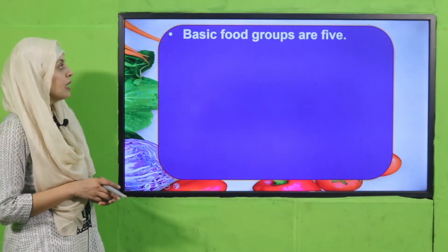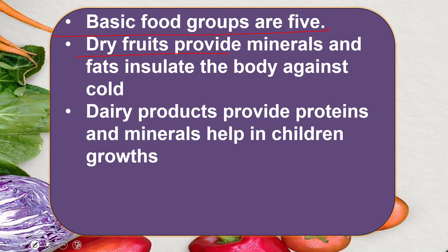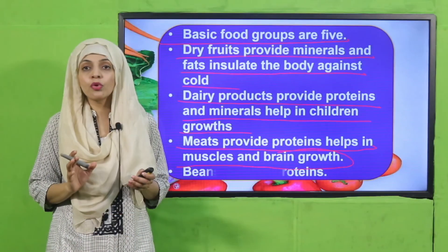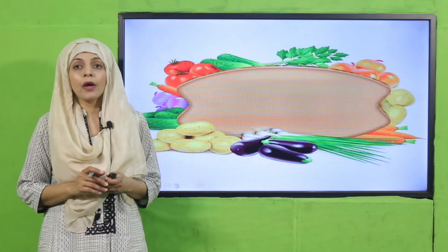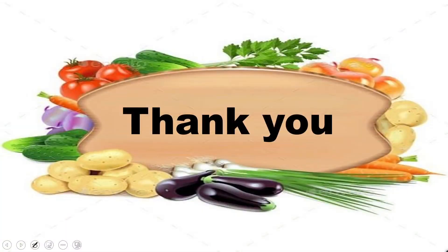Now is the time for wrap-up. What have we learnt today? Today we learnt that basic food groups are five. Dry fruit provides minerals and fats and insulates the body against cold. Dairy products provide protein and minerals and help children in growth. Meat provides proteins and helps us in muscle and brain growth. I hope you have enjoyed today's lecture. Keep everybody around you safe. Have a good day. Thank you so much. Allah Hafiz.